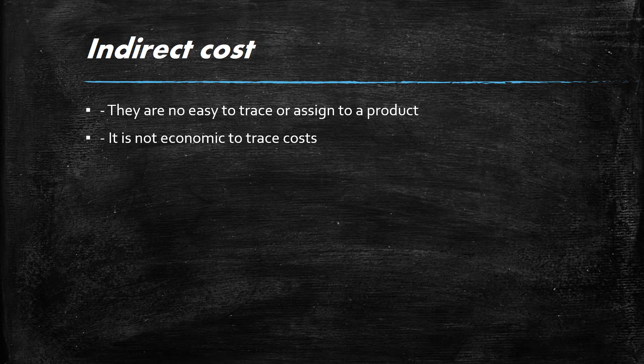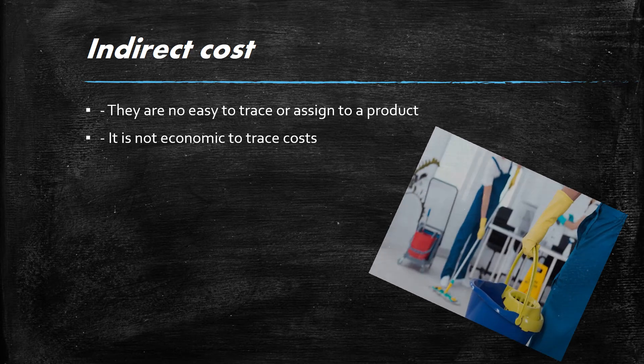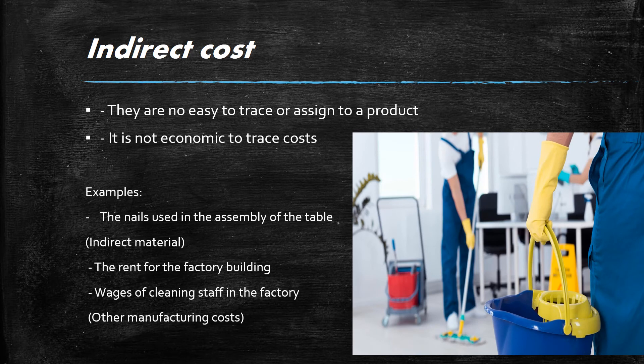Manufacturing costs also include costs which are not directly incurred or cannot easily be traced or assigned to a product, or where it is simply not economic to trace them. For example, the nails used to assemble the table represent indirect material. The rent for the factory, the wages of the cleaning staff, and electricity are other examples — we cannot attribute these costs to a particular product, but they are incurred in the production process.